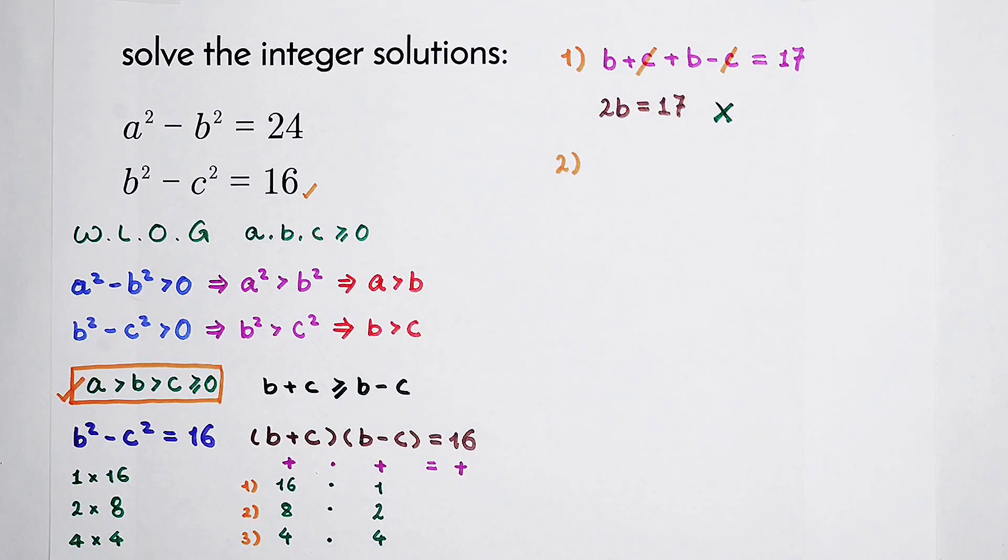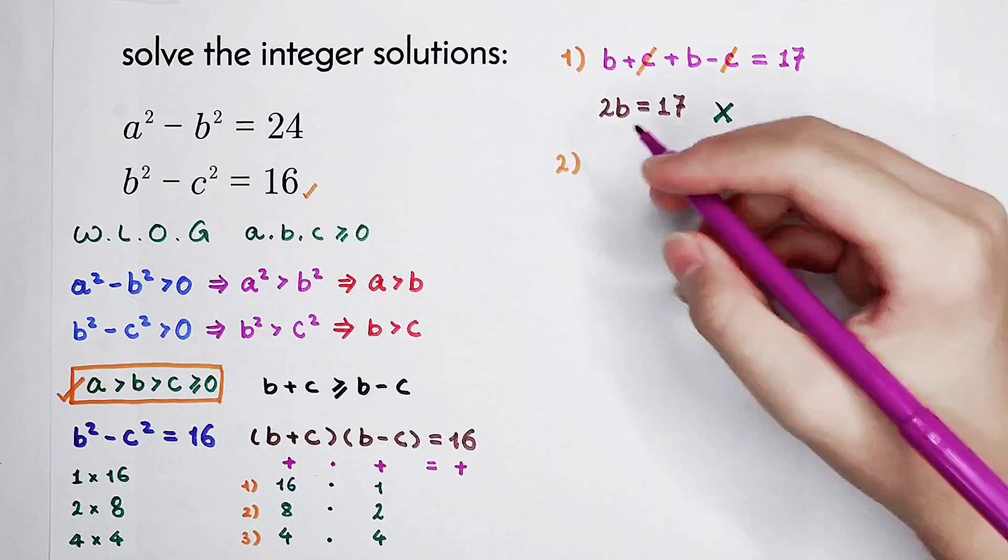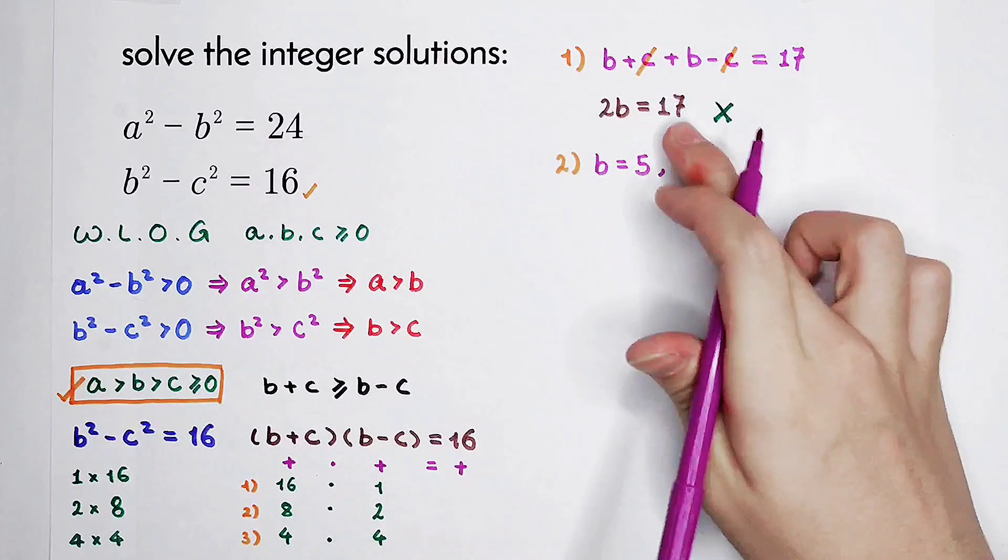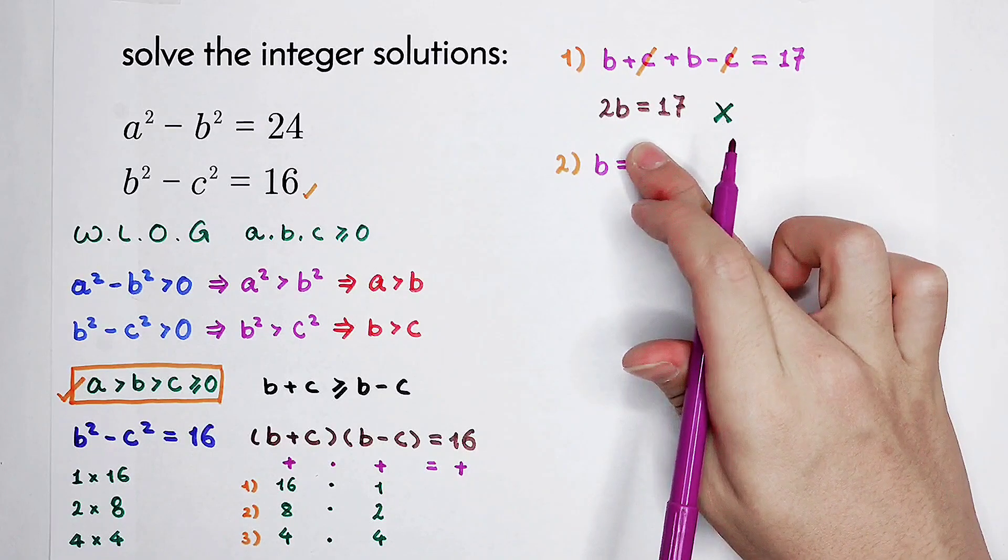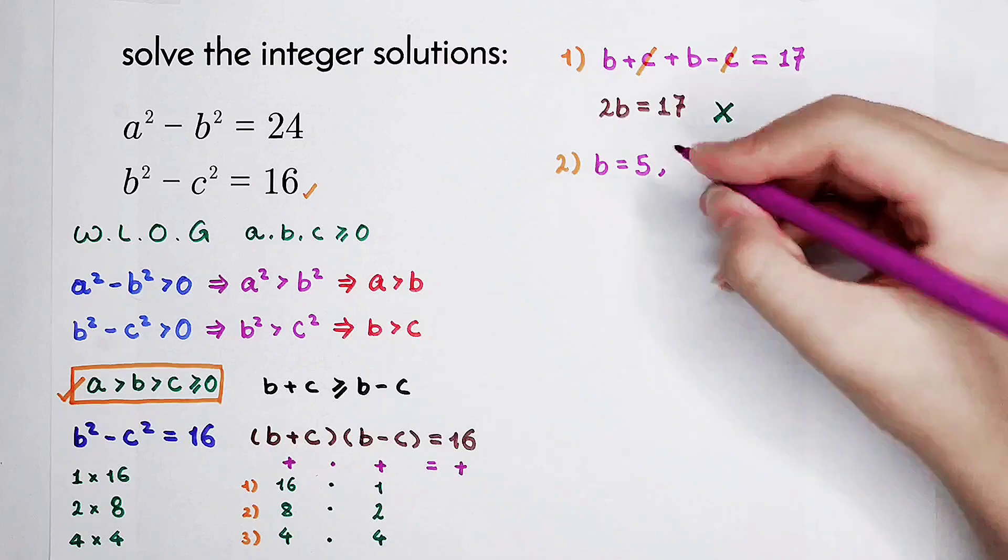In our second case, b plus c plus b minus c equals 8 plus 2 equals 10. So 2b is 10, and b equals 5. Since b plus c equals 8, c is 3.